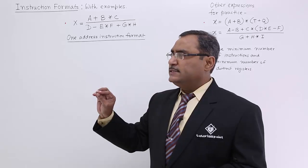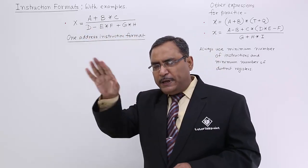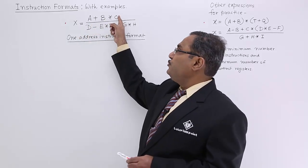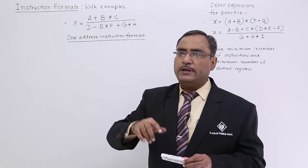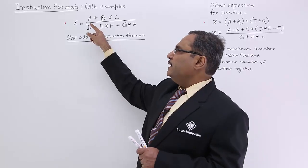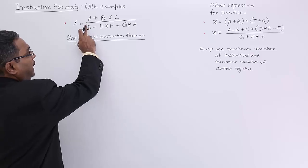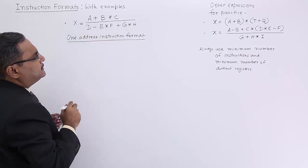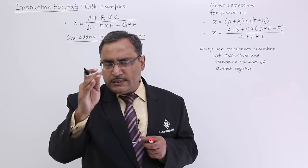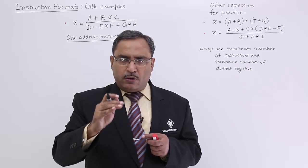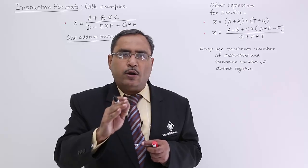My approach is to always start with the denominator. Calculate the total expression's value in a certain register, then keep it in a temporary variable. Then go on computing the numerator, and after getting the full value in a certain register, go for DIV with the temporary variable. In one-address instruction format, always keep in mind that one of the operands will be kept in the accumulator register — that is mandatory.